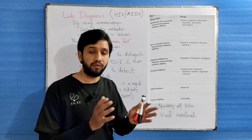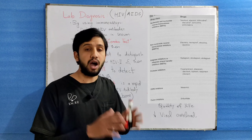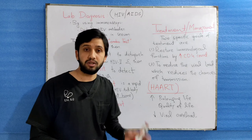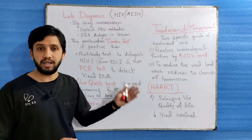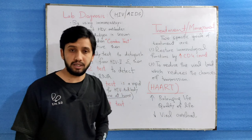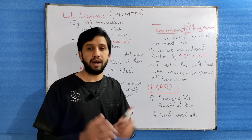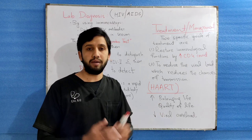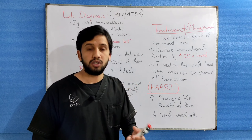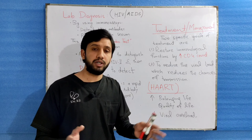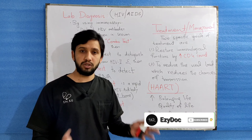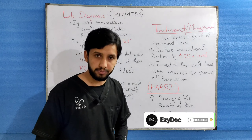Some of the most commonly used antiretroviral drugs include NNRTIs, NRTIs, NCCIs, and CCR5 inhibitors. All these are drugs which can be used for HIV infection.